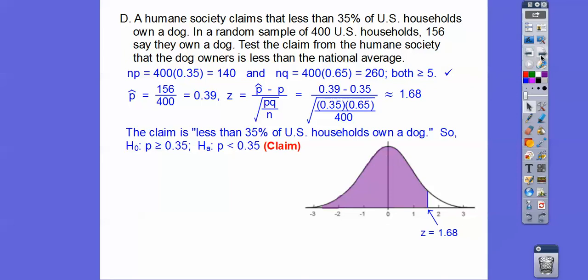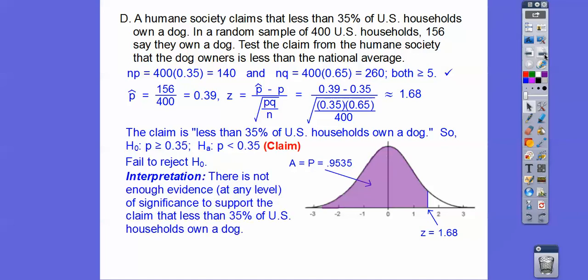So let's go ahead and find what this 1.68 means from the Z-score table. The standard normal curve has 0, 1, 2, 3 on the right and negative 1, 2, 3 on the left. So 1.68 is way over to the right. Since this is 50%, when you look up 1.68 we get that the P-value is 0.9535. So we're going to fail to reject the null hypothesis. There's not enough evidence at any level of significance to support the claim that less than 35% of U.S. households own a dog.